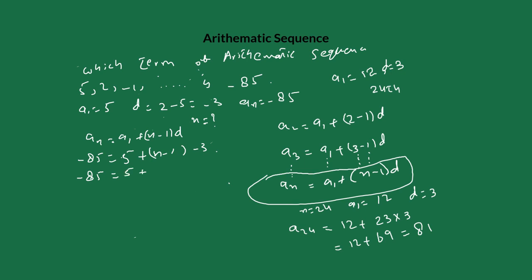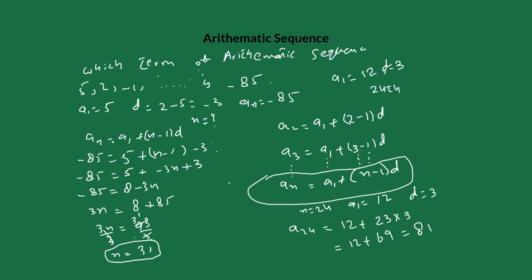Expanding: negative 85 equals 5 plus negative 3n plus 3, which gives negative 85 equals 8 minus 3n. Rearranging: 3n equals 8 plus 85, so 3n equals 93. Dividing both sides by 3, n equals 31. So negative 85 is the 31st term of the sequence 5, 2, negative 1, and so on. Hope you find this helpful.